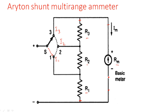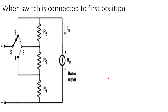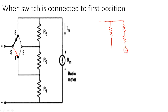When switch is connected to first position, R1 will be on one side. What about R2 and R3? R2 and R3 come in series with the ammeter. So this is R2, this is R3, and this is the ammeter. This is R1, R2, R3, and this is Rm.